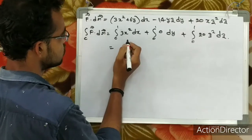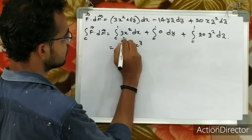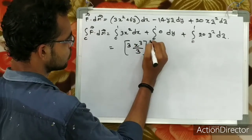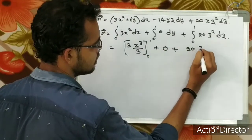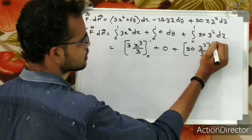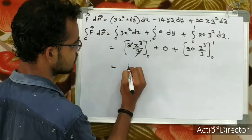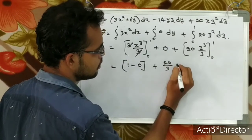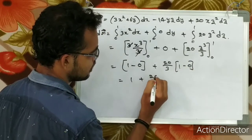Evaluating the integrals: for C1 we get 3x cubed divided by 3 with limits 0 to 1, which equals 1. For C3 we get 20z cubed divided by 3 with limits 0 to 1, which gives 20 by 3. So the total is 1 plus 20 by 3, which equals 23 by 3.